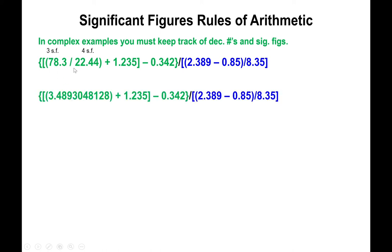Carrying out 78.3 divided by 22.44, your calculator gives 3.4893048128. You know the answer needs three sig figs, but since this isn't the final answer, don't round yet. Instead, mark the third significant figure — the eight — with a small hat to remind yourself where you're stopping. Stopping at the eight means this number has two decimal places, which is important because the next operation is an addition and subtraction.